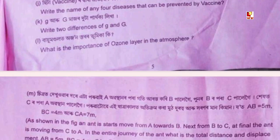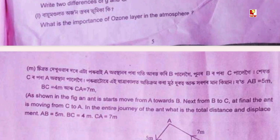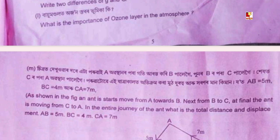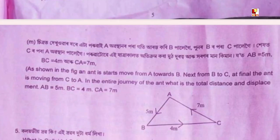AB is equal to 5 meters, BC is equal to 5 meters, and BC is equal to 7 meters.